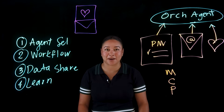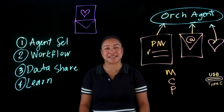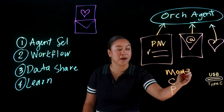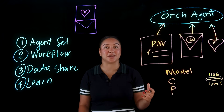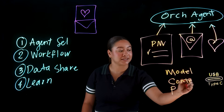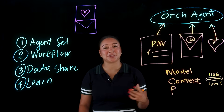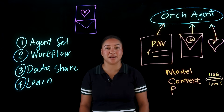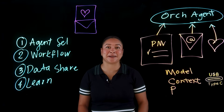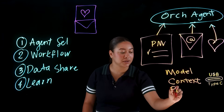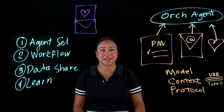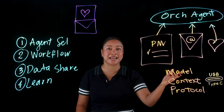MCP has been described by some as kind of like a USB-C port for AI applications. The M stands for model — this is referring to the large language model at the heart of your agent. The C is context — this is all about the extra information needed to get work done, maybe documents, search results, or data from some of those systems we talked about earlier. And the P is protocol — this is the standardized way of communicating that lets the model interact with those tools and data sources.